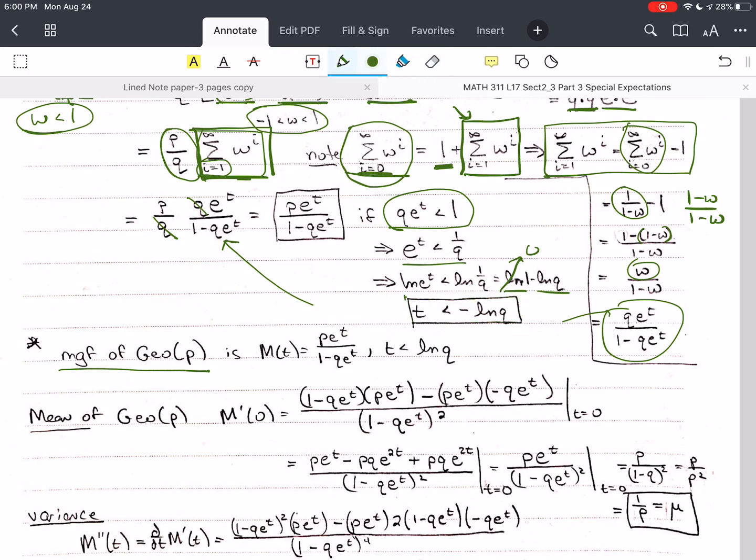The MGF of the geometric distribution is this whole thing. Without this, you don't have it. This is where it converges. So it's where t is less than the natural log of q. So p e to the t divided by 1 minus q e to the t.